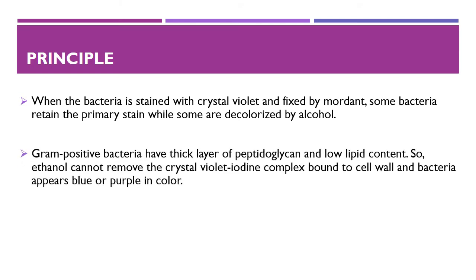In the case of gram-positive bacteria, the cell wall has a thick layer of protein-sugar complexes called peptidoglycan, and lipid content is low. Decolorizing the cell causes this thick cell wall to dehydrate and shrink, which closes the pores in the cell wall and prevents the stain from exiting. So ethanol cannot remove the crystal violet-iodine complex bound to the cell wall, and bacteria appear blue or purple in color.